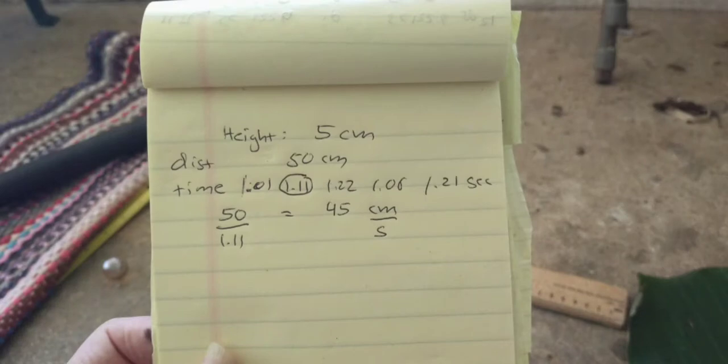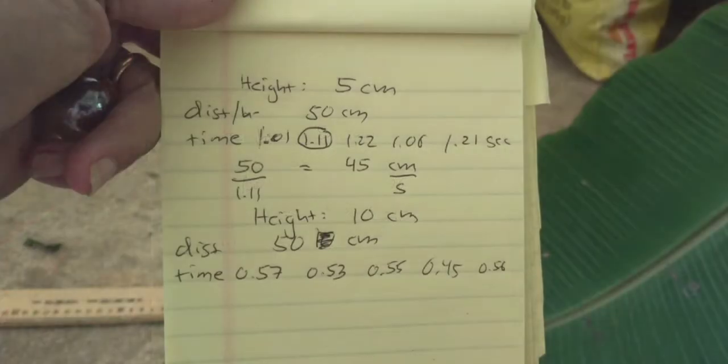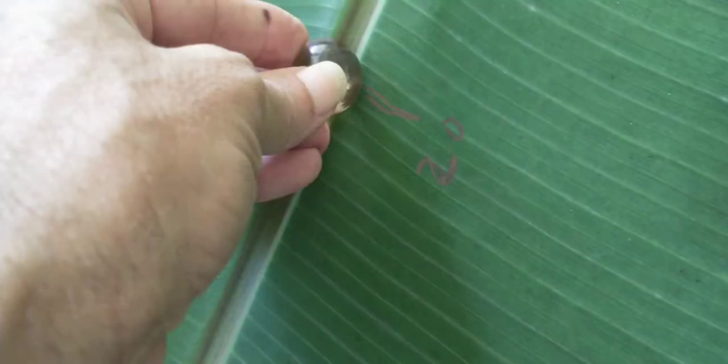I'm starting the stopwatch when the marble starts at zero on that ruler. And here you can see I'm taking five times for each height.